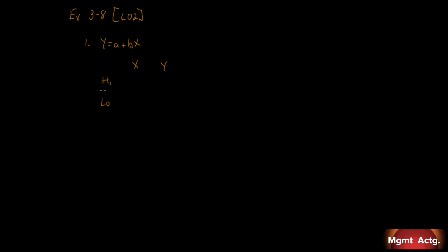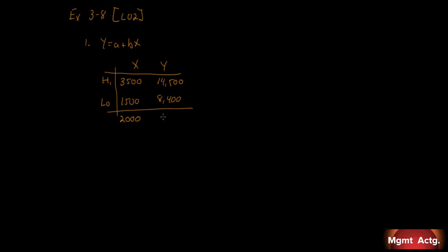Looking down the list for the highest number of blood tests performed, we find 3,500, and the costs associated with 3,500 are $14,500. The lowest observation is 1,500 blood tests, with associated costs of $8,400. Subtracting gives us a difference of 2,000 in X and $6,100 in Y. Dividing $6,100 by 2,000 gives us $3.05 — that is our B value.